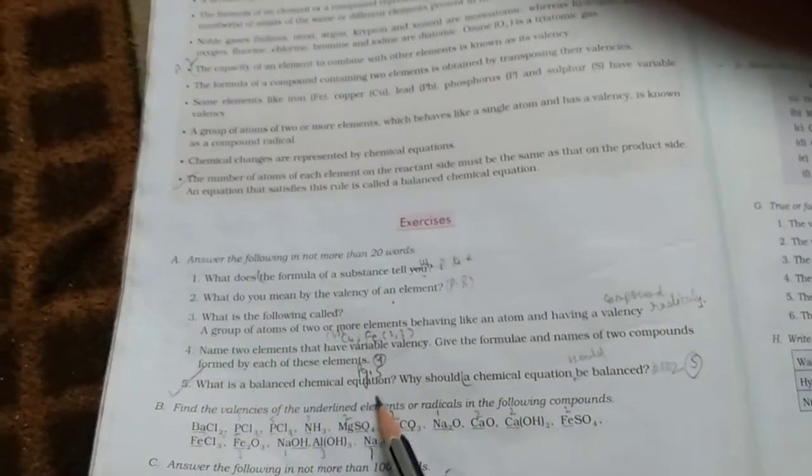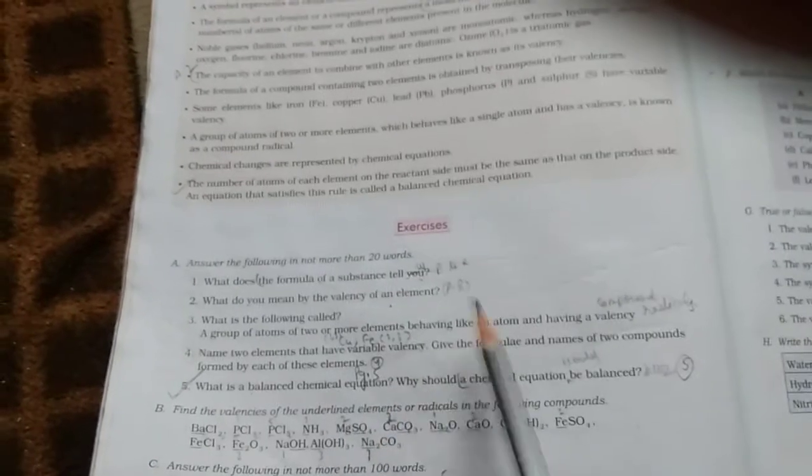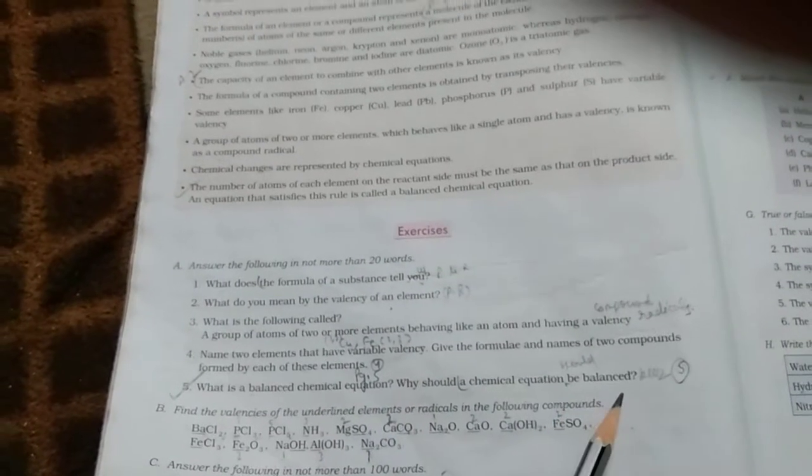Okay, children. Now, we will discuss the questions of the remaining questions of this chapter. So, question number 5 from A part. What is balanced chemical equation? Why should a chemical equation be balanced?